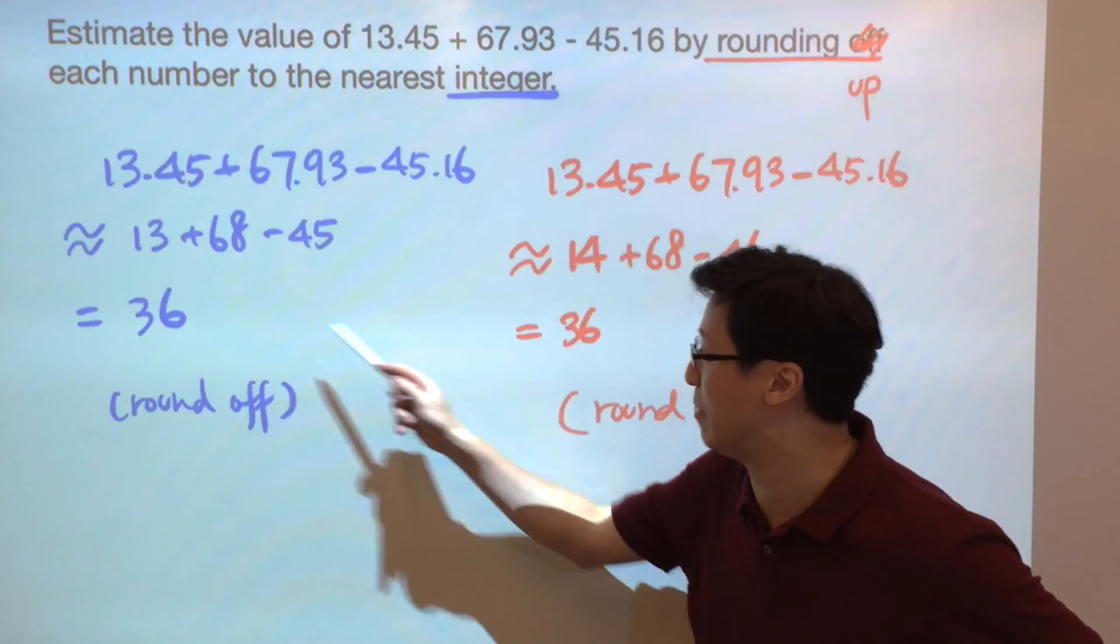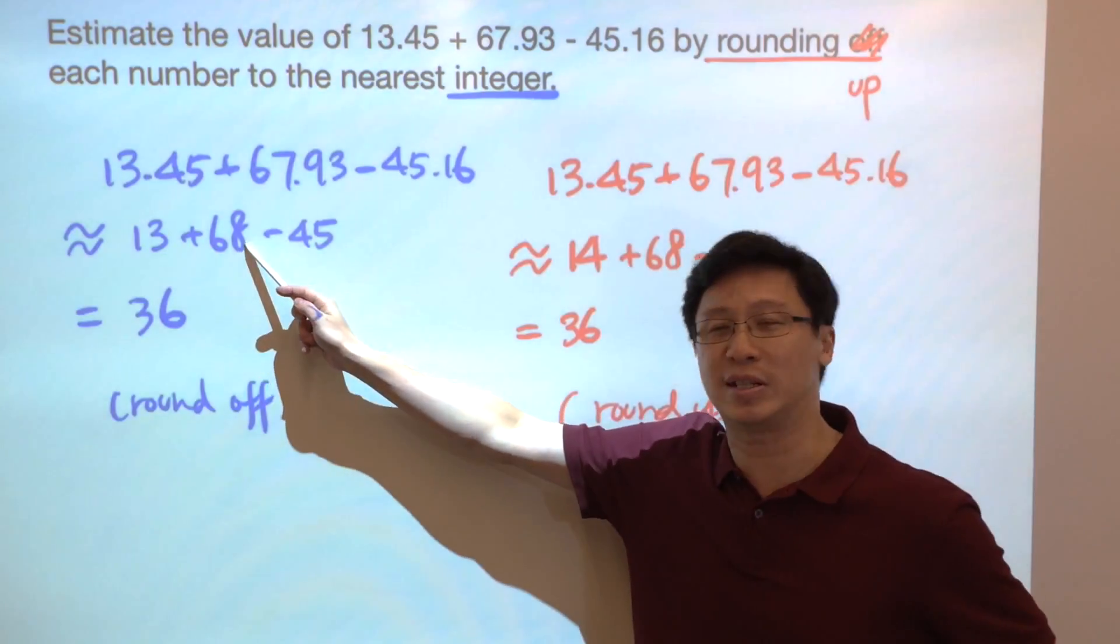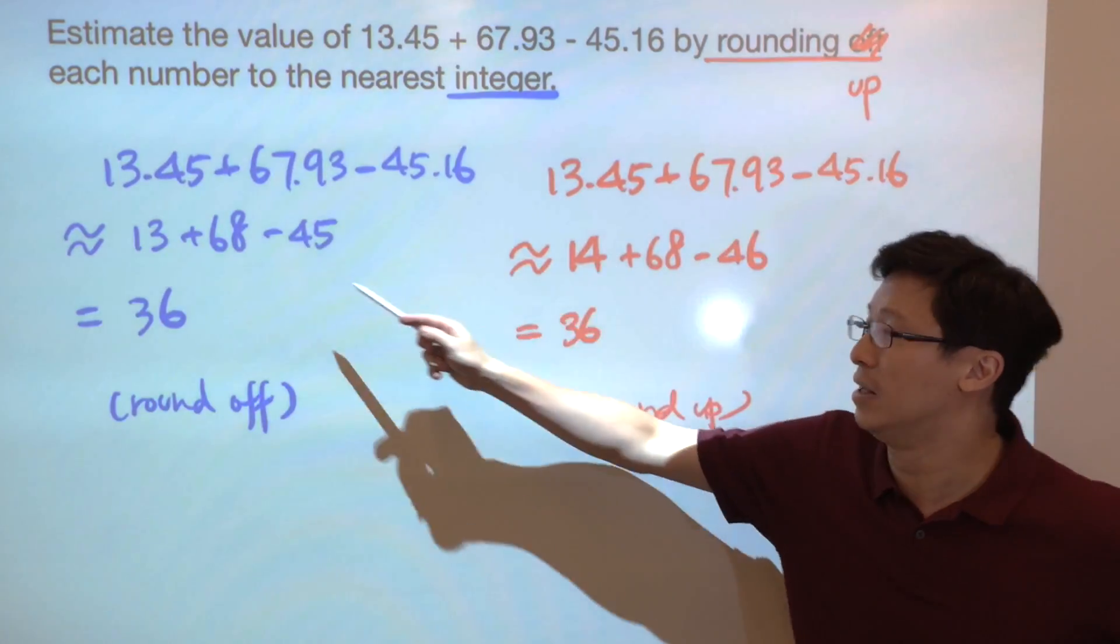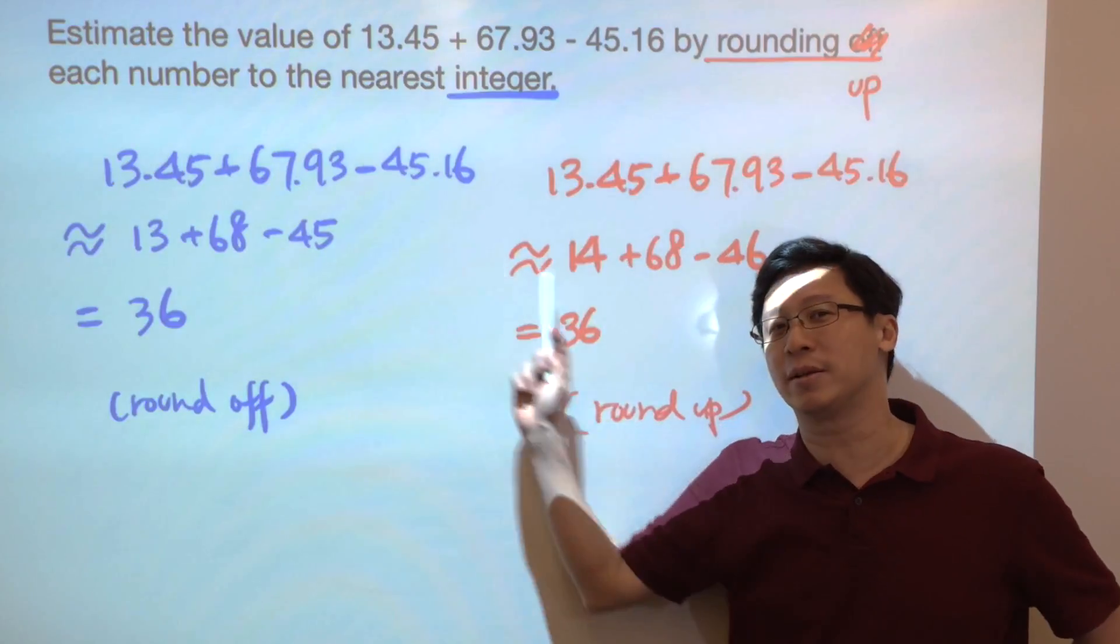And for 68, on both sides you can see that they are both increased by one.